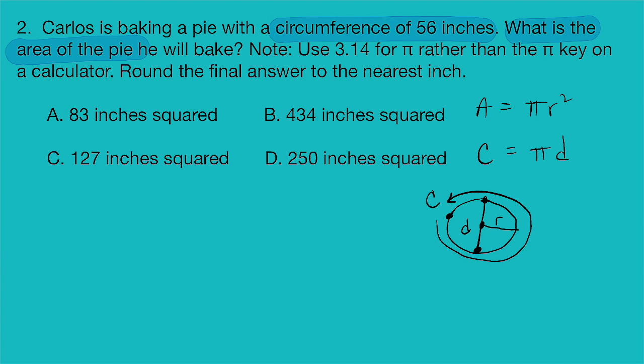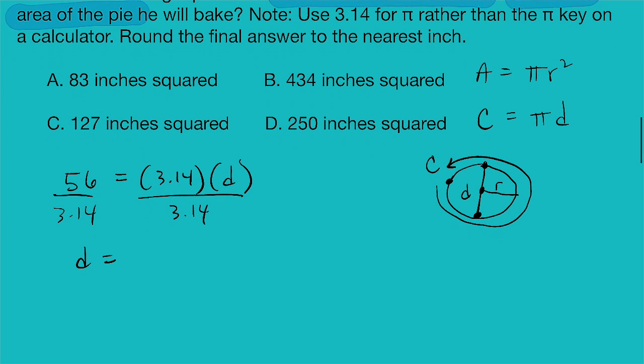So since we're given the circumference, we're going to start with that equation. Circumference equals pi times diameter. So 56 is going to equal 3.14 times d. We don't know what the diameter is yet. So all we have to do here is divide by 3.14 on both sides. And so 56 divided by 3.14 is going to give us a diameter of 17.8.